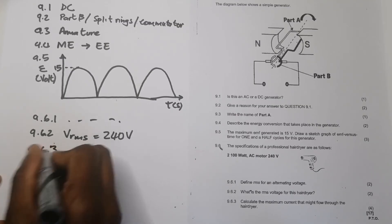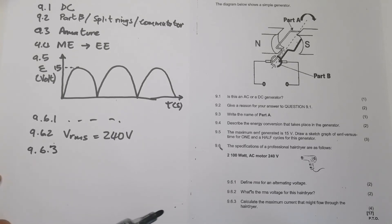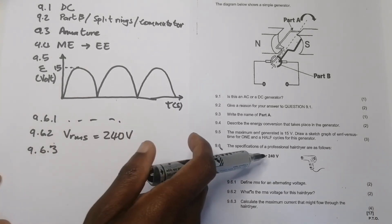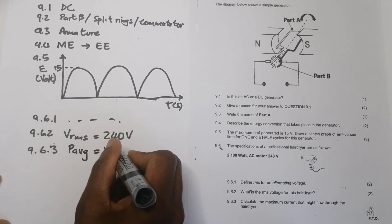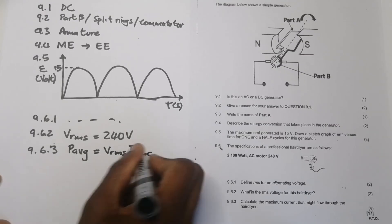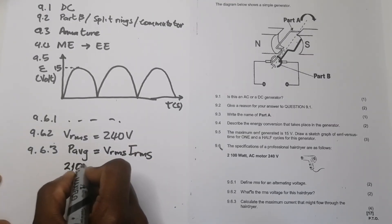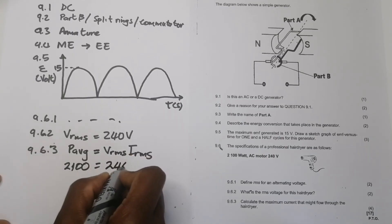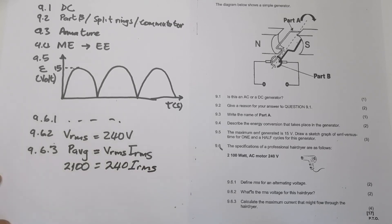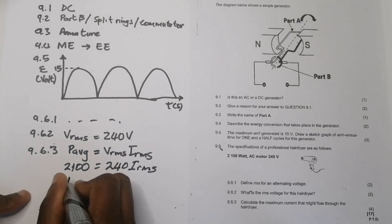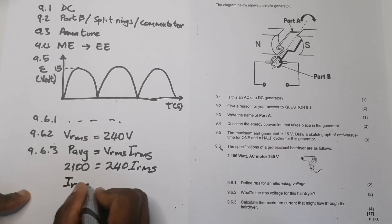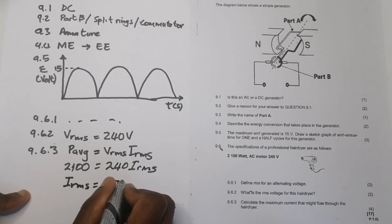And let's go to the last one. They say calculate the maximum current that flows through the hair dryer. So remember, you've got power, you've got VRMS, and remember that power, we use P average, so that's the average power, that's VRMS multiplied by IRMS. That should be a straightforward calculation, so that's 2100 watts, you've got your voltage is at 240, and we know this is multiplied by IRMS. So that's divide by 240, and we're given 8.75, so IRMS equals 8.75 amps.